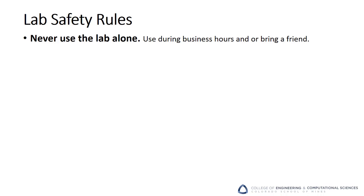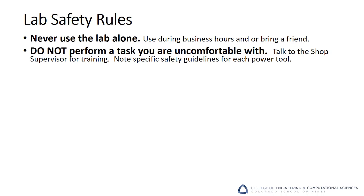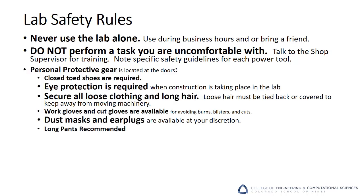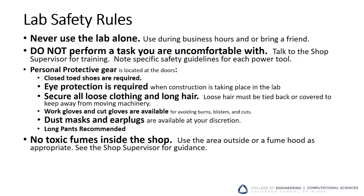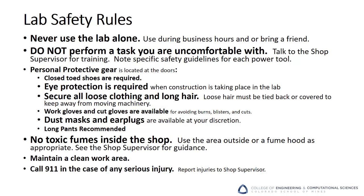There are several specific lab safety rules that must be followed. Never use the lab alone — use it during business hours or bring a friend with you. Do not perform a task you are uncomfortable with; talk to the shop supervisor for training. Note specific safety guidelines for each power tool. Wear personal protective gear located at the doors. Closed toed shoes are required if you're working on something heavy. Eye protection is required when construction is taking place in the lab. Secure all loose clothing and long hair — loose hair must be tied back or covered to keep it away from moving machinery. Work gloves and cutting gloves are available to avoid burns, blisters, and cuts. Dust masks and ear plugs are available at your discretion and long pants are strongly recommended. No toxic fumes inside the lab — use the area outside or a fume hood as appropriate. Maintain a clean work area and call 911 in the case of a serious injury. Report any injuries to the shop supervisor. Failure to follow these rules will result in immediate and possibly permanent removal from the laboratory.